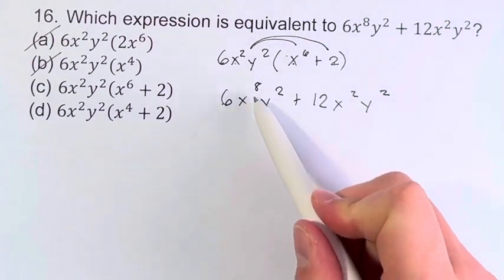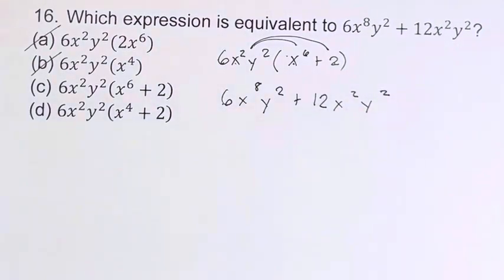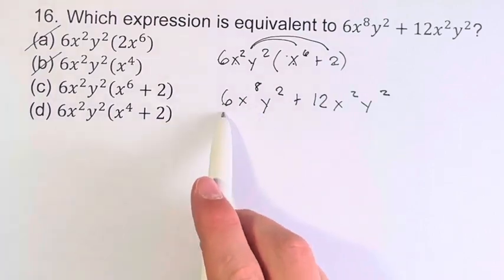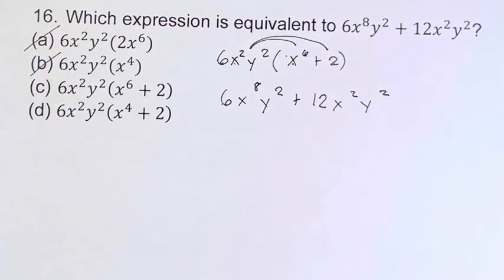This leaves us with 6x to the 8th y squared plus 12x squared y squared. You notice that this is equivalent to our given expression, which means c is our final answer. We don't even have to check d.